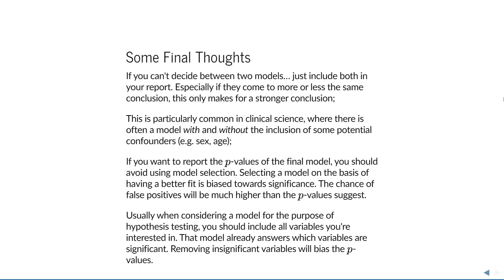Some final thoughts: if you can't decide between two models, I wouldn't spend too much time — just include them both. Especially if they come to more or less the same conclusion, you're actually making a stronger case by showing your conclusion is invariant to the choice of model. This is particularly common in clinical science, where there's often debate about including variables like sex or age. Many studies run one model with and one without, and if they come to the same conclusion, that's really what statistics is about.